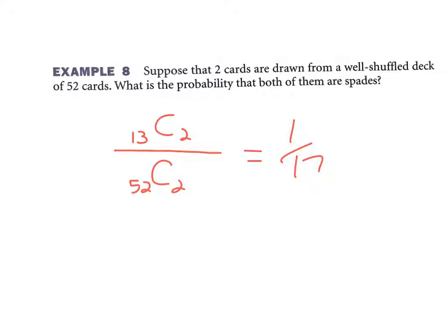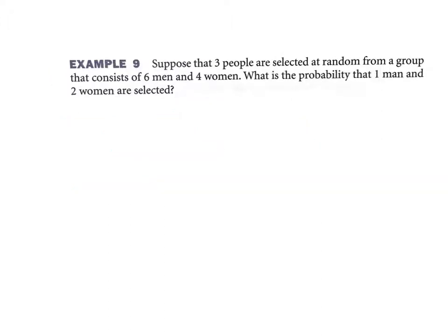One thing real quick again: the number on the bottom, the C, represents all the possible combinations of two cards you could draw. And on the top, all the combinations of two spades you could draw.